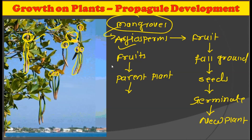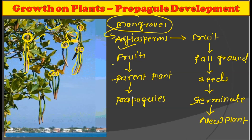In mangroves, the fruit matures but remains on the parent plant, and it starts to develop the propagules. These propagules are elongated structures present on the parent plant itself. This is quite different from angiosperms, where the fruit matures, falls on the ground, and from the seeds a new plant germinates. But this does not occur in mangroves, as mature fruits remain on the parent plant, and while remaining there, these fruits develop the propagules.